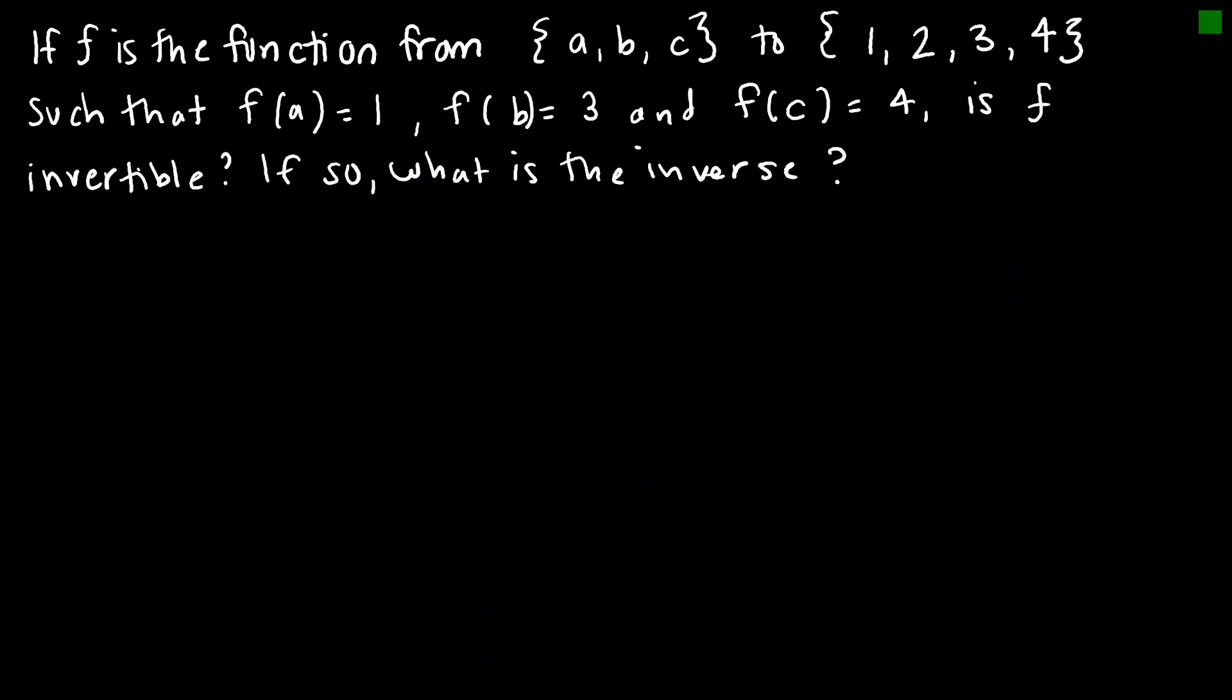So let's take a look at an example to see if this function F is invertible. And this function F is the function from A, B, C to 1, 2, 3, 4, such that F of A equals 1, F of B equals 3, F of C equals 4. And the question asks, is F invertible? And then if we answer yes to that, then we answer what is the inverse?